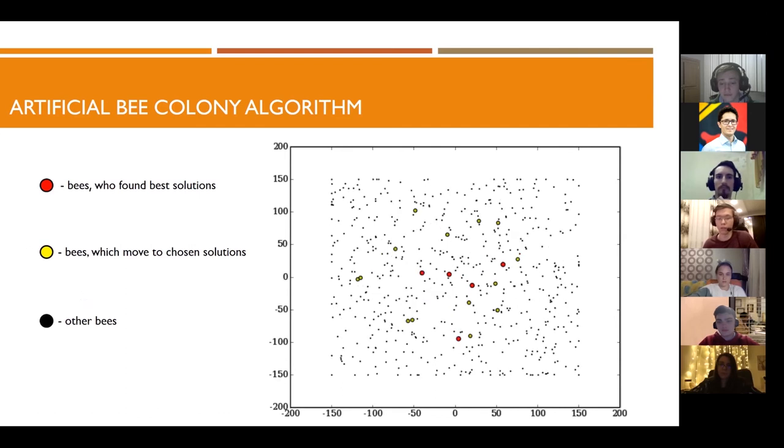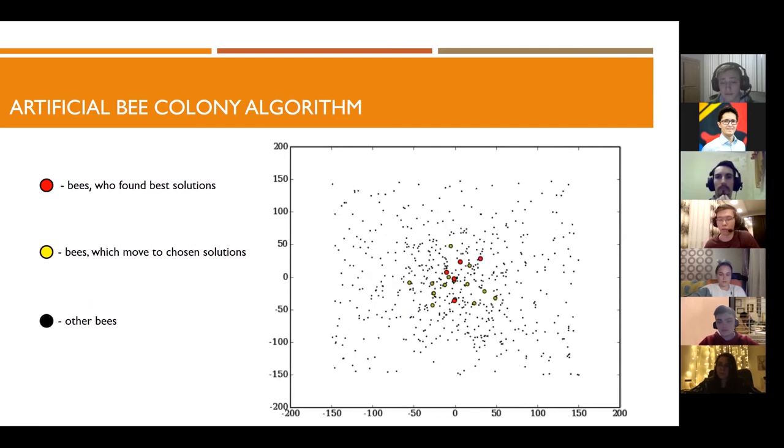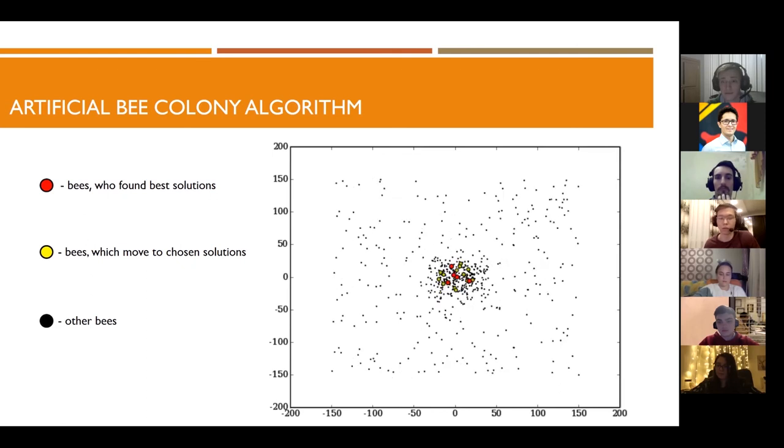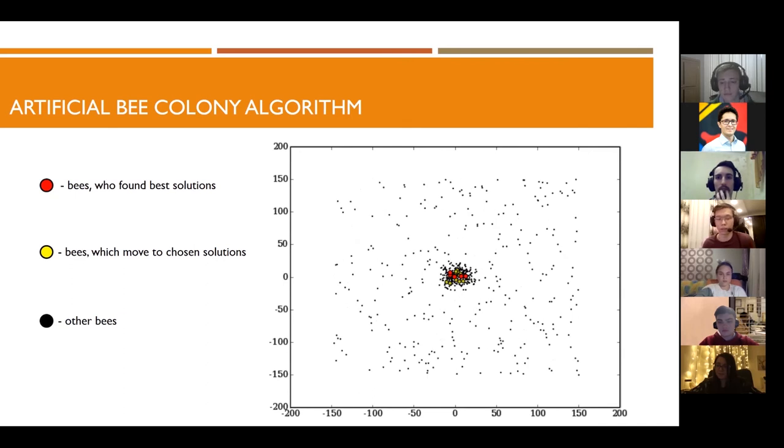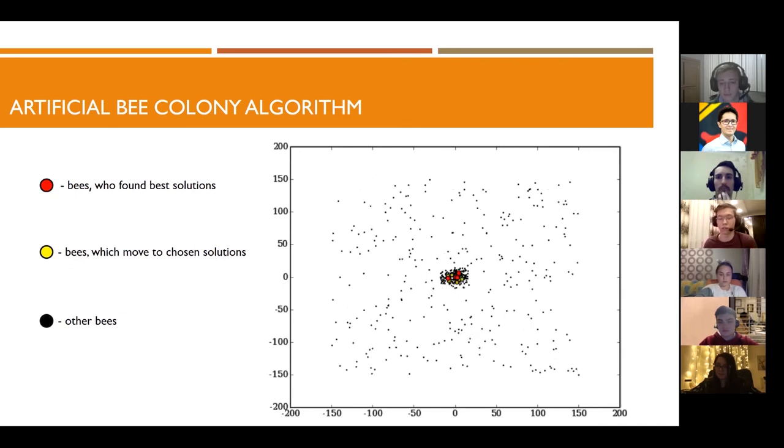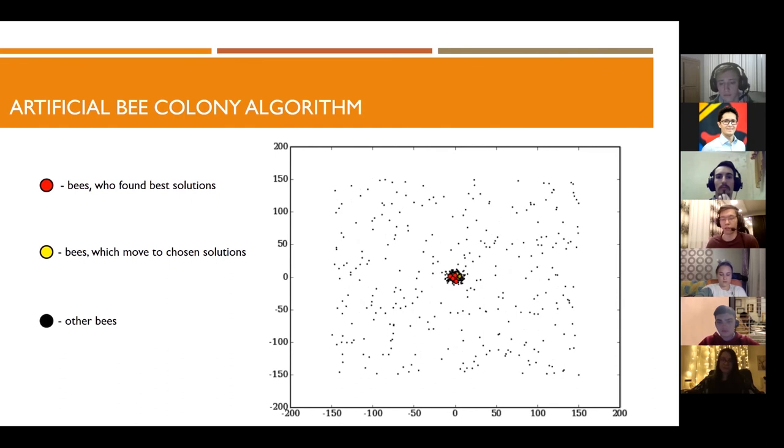In the animation, you can see how the bees are gradually accumulating around one better solution. Red dots are bees who found the best solution, yellow is the selected solution, and the black dots are bees including scouts which are located randomly.